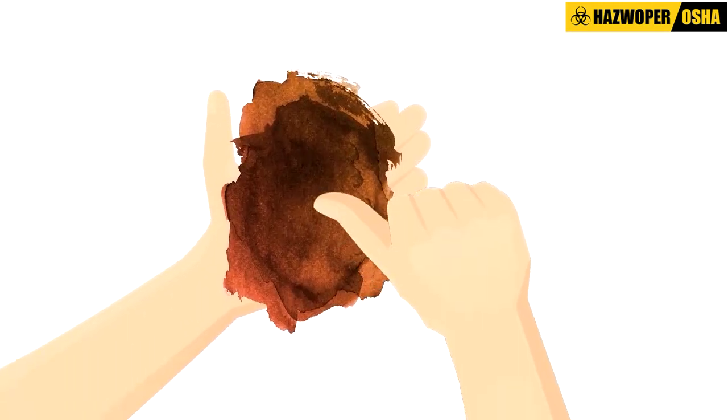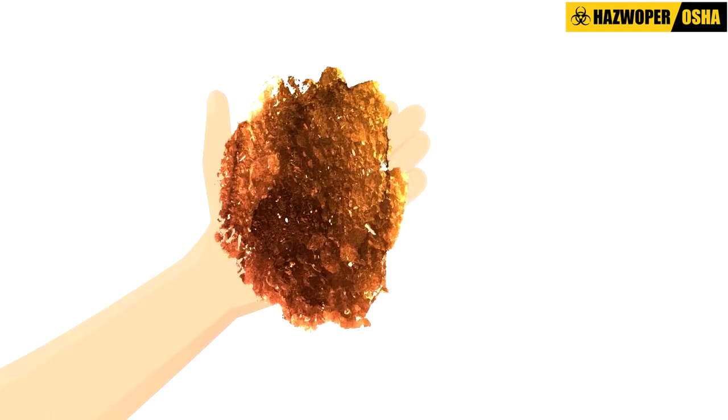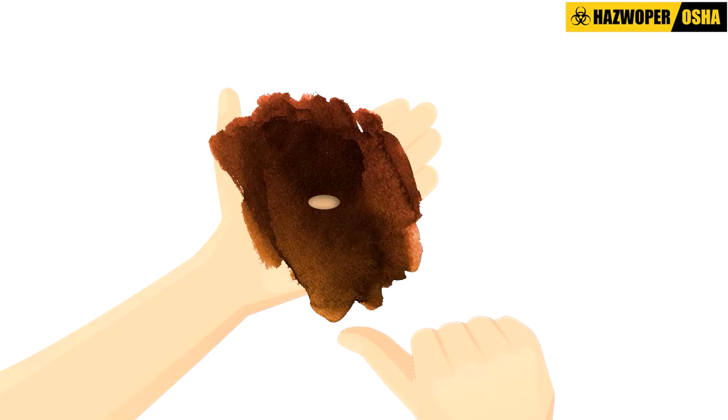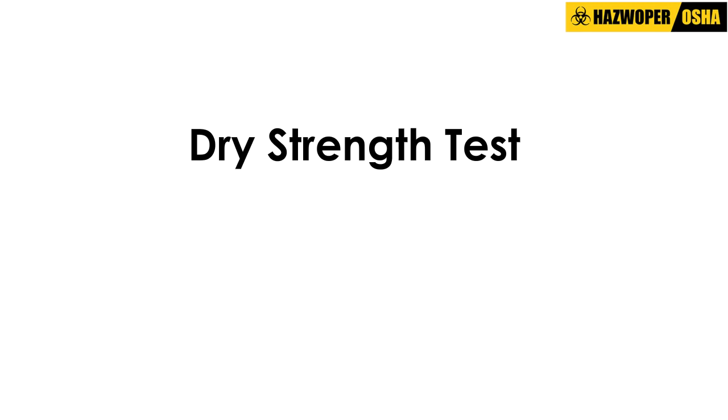For the thumb penetration test, the competent person attempts to press a thumb firmly into the soil in question. If the thumb makes an indentation only with great difficulty, the soil is probably Type A. If the thumb penetrates no further than the length of the thumbnail, it is Type B soil. If the thumb penetrates the full length of the thumb, it is Type C soil.